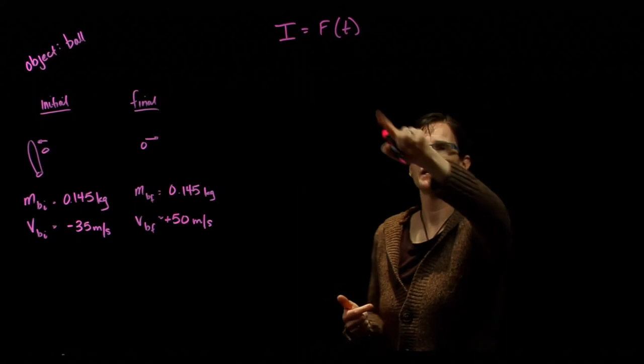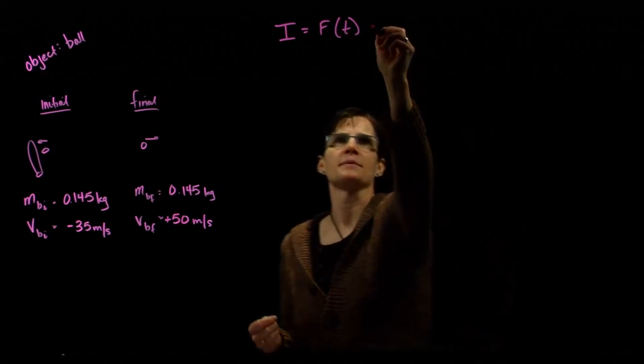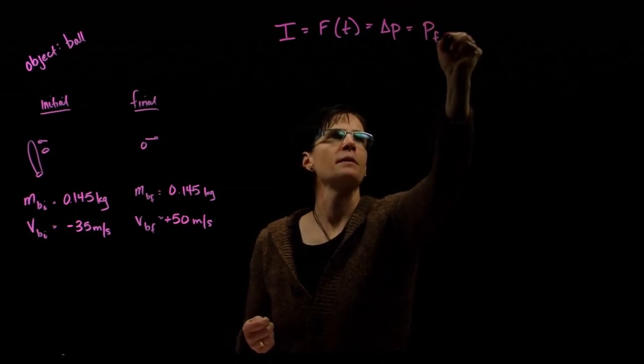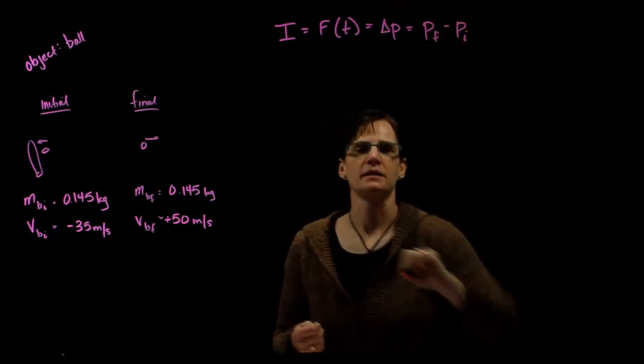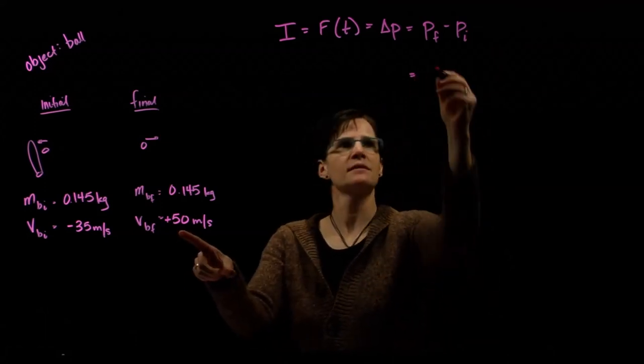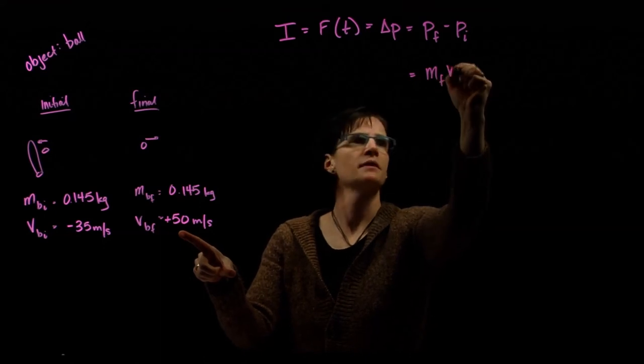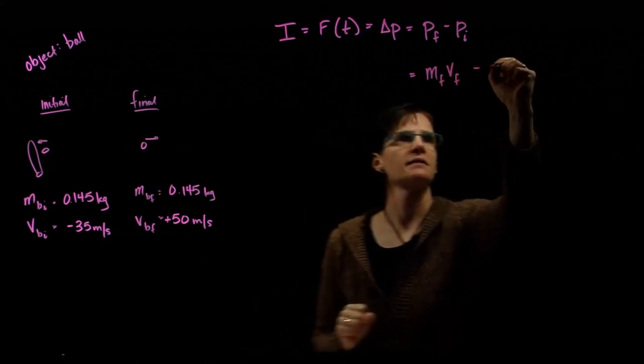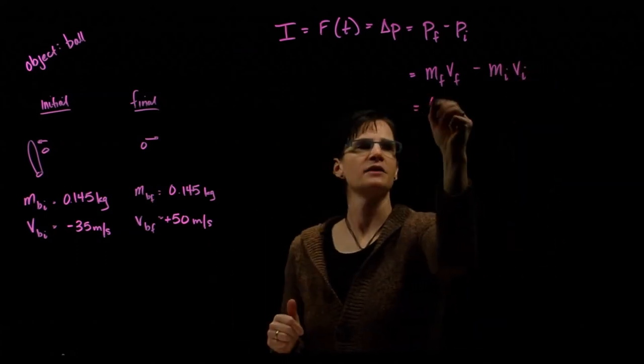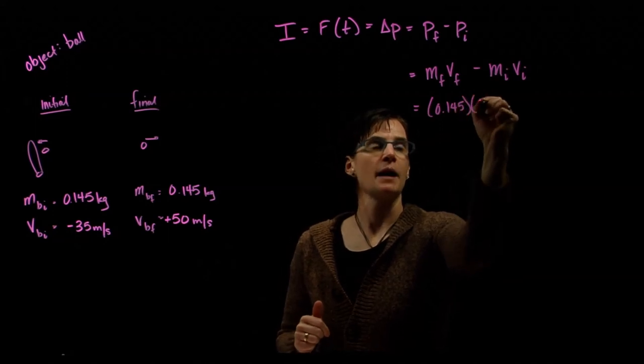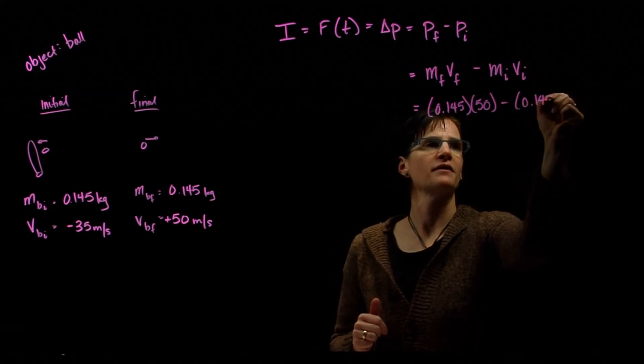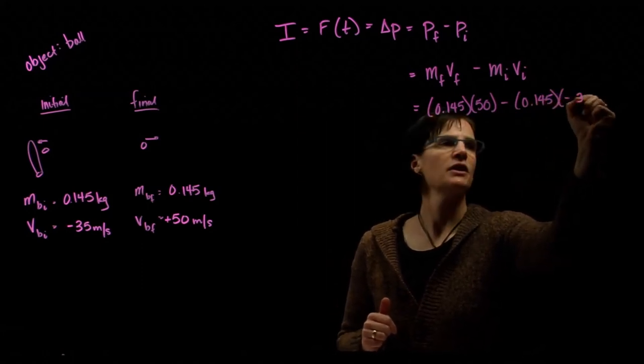So the impulse, the change in momentum, is the force times the time. That impulse is also defined as my change in momentum, or p final minus p initial. So my final momentum is mass final times final velocity minus my initial momentum.